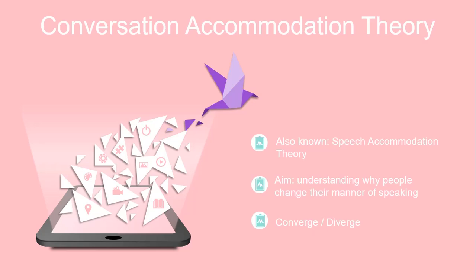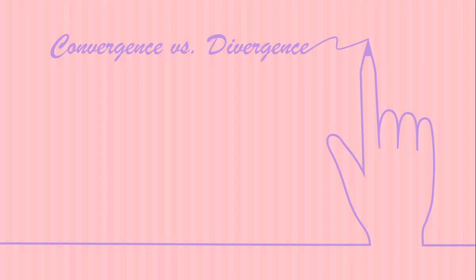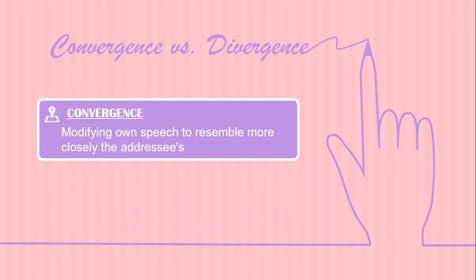The key terms in this theory are convergence and divergence — what it means to converge or to diverge. When you do convergence, when you are converging to a person's speech, it means that you modify your own speech patterns, your codes, to resemble more closely the speech of the person you are talking to.